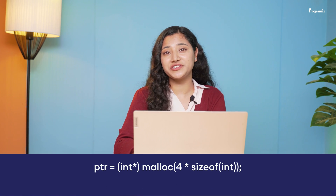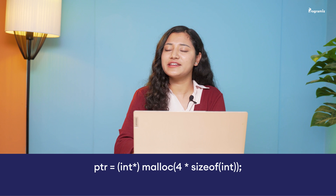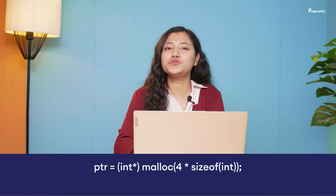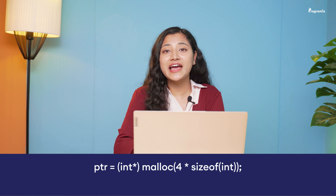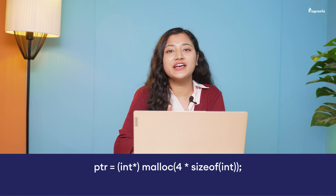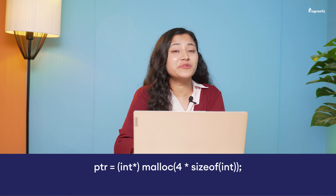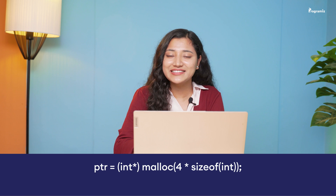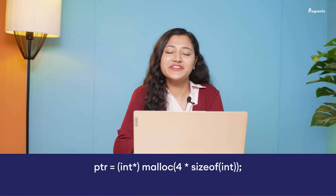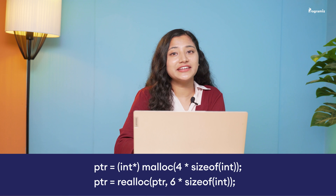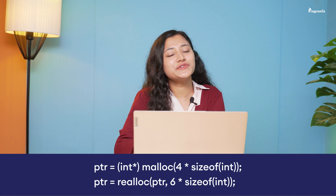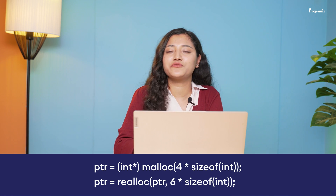In our previous example we allocated 400 bytes of memory to store 4 integer values. Now suppose we need to store 2 more integer data. In this case we use the realloc function to change the size of dynamically allocated memory. Now let's see the syntax to use the realloc function. Here, 6 into sizeof(int) is the new size allocated using the realloc function.